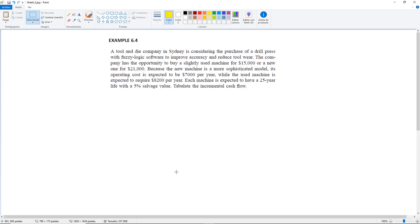Example 6.4. A tool and die company in Sydney is considering the purchase of a drill press with fuzzy logic software to improve accuracy and reduce tool wear. The company has the opportunity to buy a slightly used machine for $15,000 or a new one for $21,000.